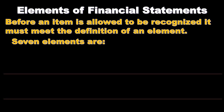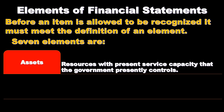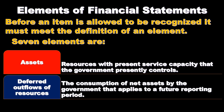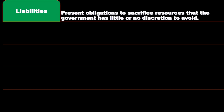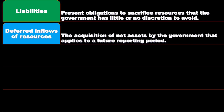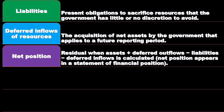There are seven elements. The first is assets: resources with present service capacity that the government presently controls. Then we have deferred outflows of resources: the consumption of net assets by the government that applies to a future reporting period. Then we have liabilities: present obligations to sacrifice resources that the government has little or no discretion to avoid. Then deferred inflows of resources: the acquisition of net assets by the government that applies to a future reporting period. Then we have net position: the residual when assets plus deferred outflows minus liabilities minus deferred inflows is calculated.